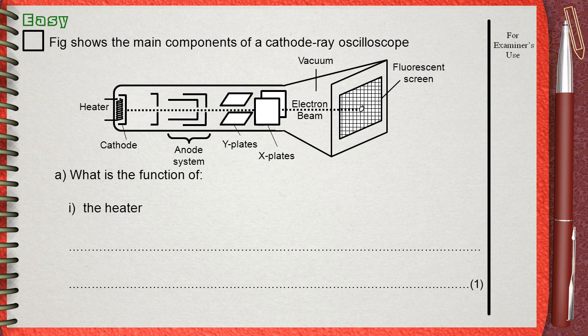Figure shows the main components of the cathode ray oscilloscope. What is the function of number 1, the heater?